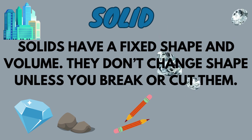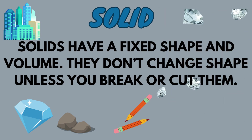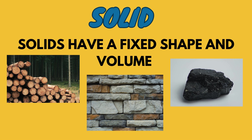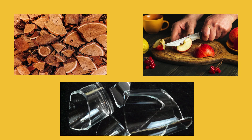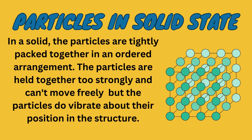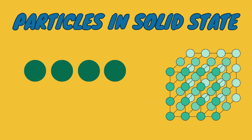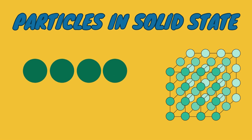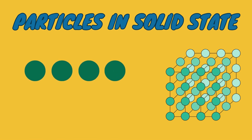What are solids? Solids have some properties that make them different from other forms of matter. Solids have a fixed shape and volume. They don't change shape unless you break or cut them. In a solid, the particles are tightly packed together in an ordered arrangement. The particles are held together too strongly and can't move freely, but the particles do vibrate about their position in the structure.